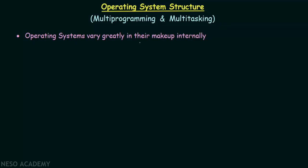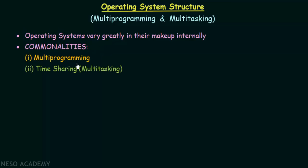Operating systems vary greatly in their makeup internally. We have different kinds of operating systems like Windows, Ubuntu and so on, and these operating systems vary in their makeup internally. But they also have so many common things in them. We will be seeing the common things that every operating system must be capable of doing. The first two things are multiprogramming and timesharing or multitasking — two very important topics. First let's talk about multiprogramming and then we will see about multitasking, which is also known as timesharing.